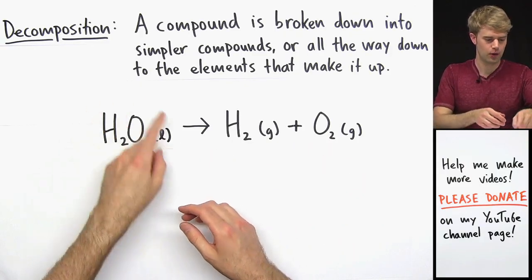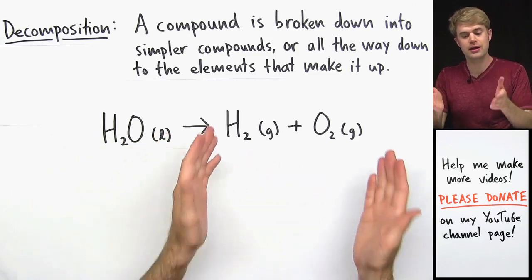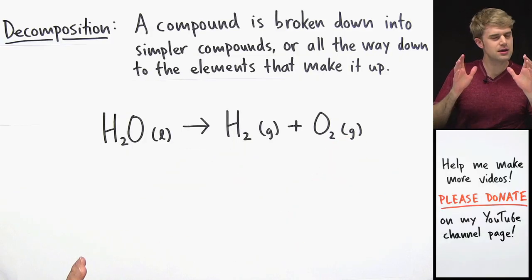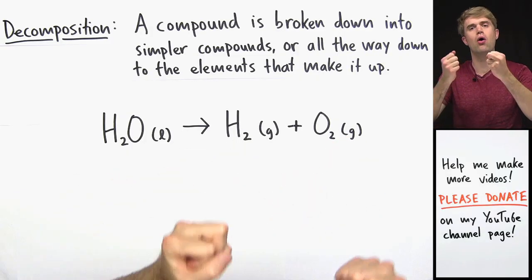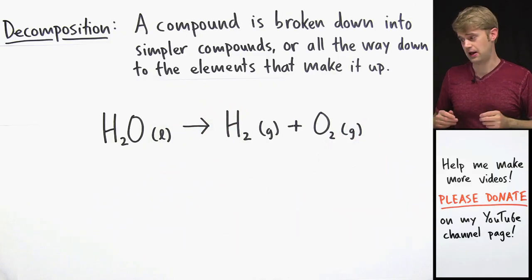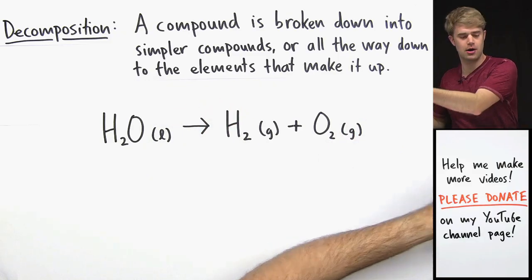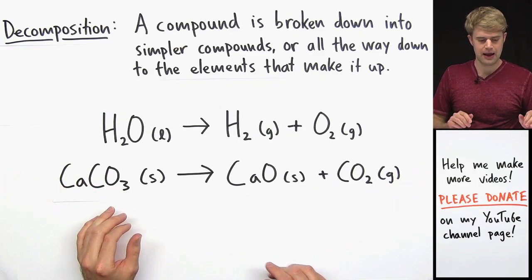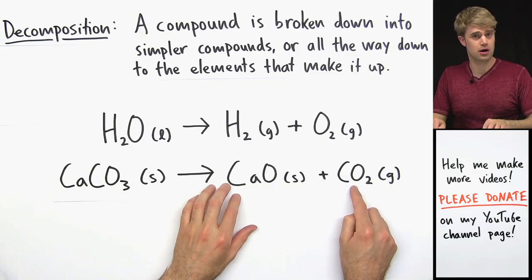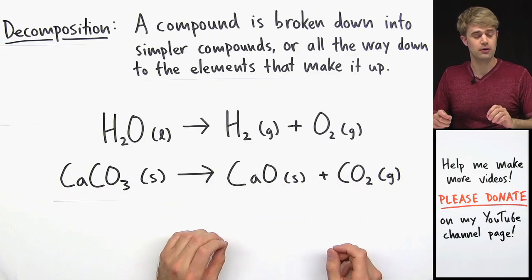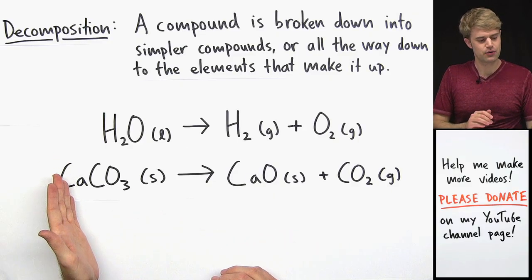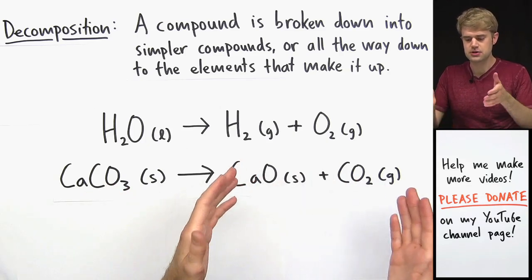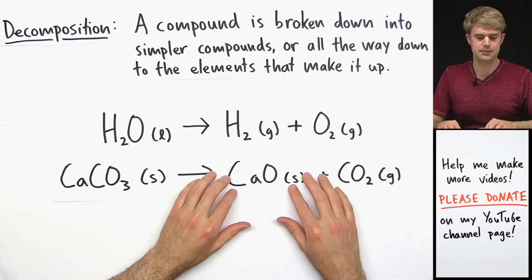In this example, we have water, H2O, and it's breaking down into hydrogen and oxygen gas — these are the elements that make it up. In a decomposition reaction, you don't have to break things down all the way to their basic elements. You can also break them down into simpler compounds. For example, CaCO3, calcium carbonate, gets broken down to two simpler compounds, CaO and CO2. It's not like we're taking this and breaking it down into just calcium, carbon, and oxygen individually. But still, because these are simpler compounds, it is also a decomposition reaction.